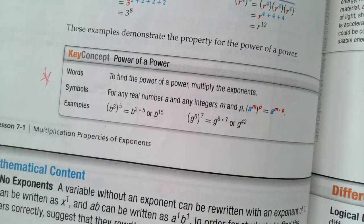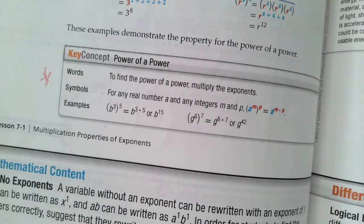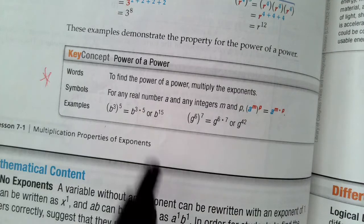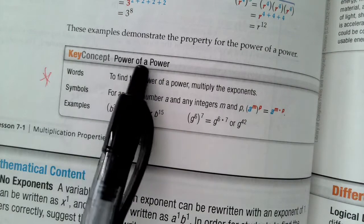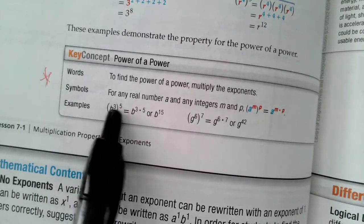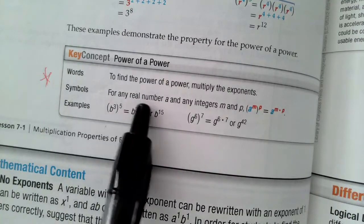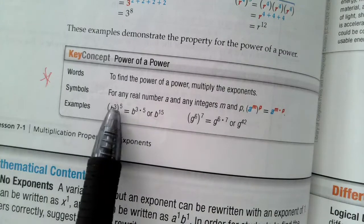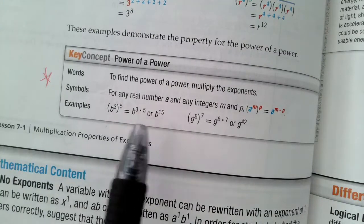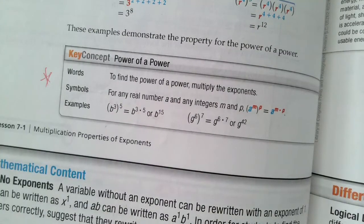Yesterday we talked about how if you have exponents with the same base, you add the exponents. Today we're going to be talking about power raised to a power, like this example: b to the third raised to the fifth. If a power is raised to a power, you're going to multiply the exponents.